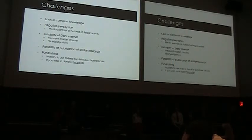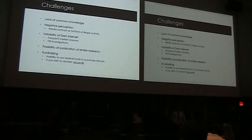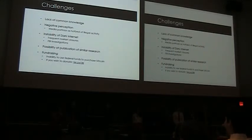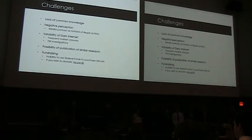As we transition into our challenges, a major one was the lack of common knowledge — we had to build on limited existing research. Another was negative perception, as the media portrayed the dark internet as a hotbed of criminal activity, and we had to move past that mindset and recognize it as a community. We also faced the instability of the dark internet: the Silk Road was seized by the FBI, then Silk Road 2.0 was seized, and then we started researching Agora, which took itself offline to avoid being seized. Additional challenges included the possibility of similar published research and fundraising, since we could not use federal funds and had to raise money independently. If you wish to donate, you can go to tr.ps/DIR or DYER.